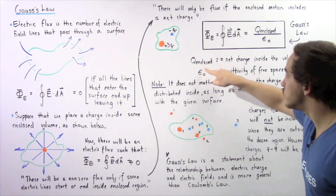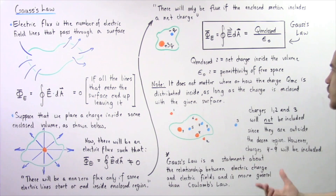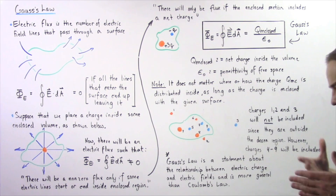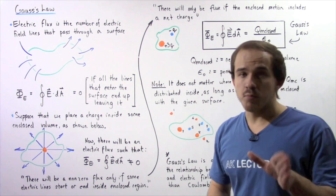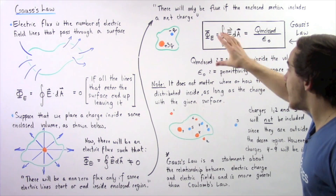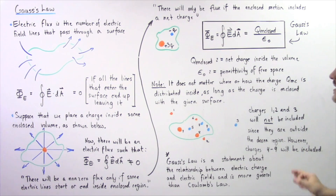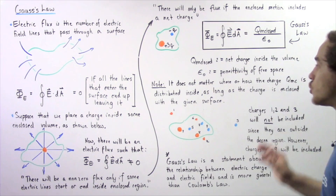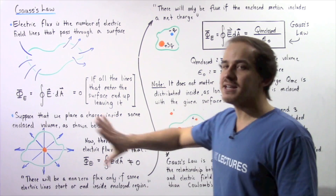Q enclosed is the net charge found inside our chosen volume or region, and epsilon naught is the permittivity of free space — simply a constant. It does not matter where or how the charge Q enclosed is distributed inside our chosen region, as long as the charge is found inside the region and not outside.